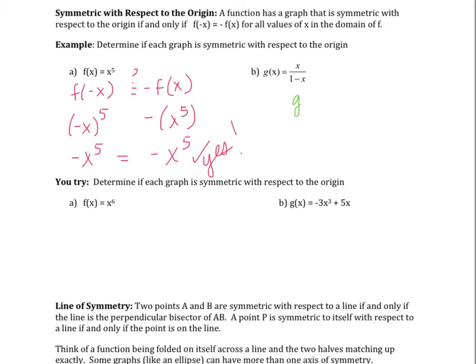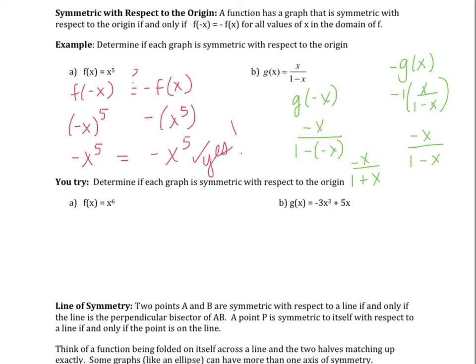For g(x) = x/(1−x): g(−x) = (−x)/(1−(−x)) = −x/(1+x). And −g(x) = −1 · x/(1−x) = −x/(1−x). Those are not the same, so this does not have symmetry with respect to the origin. Try the next two functions on your own — one should not have origin symmetry, and one should. Pause the video and come back when you're ready.